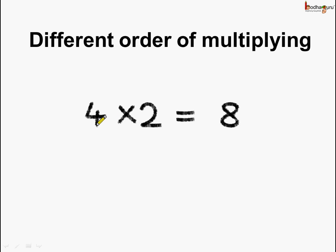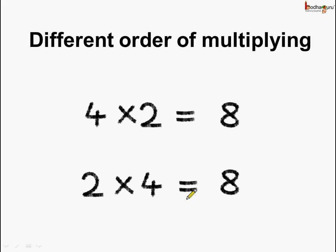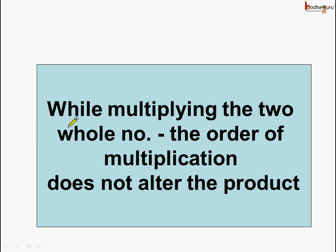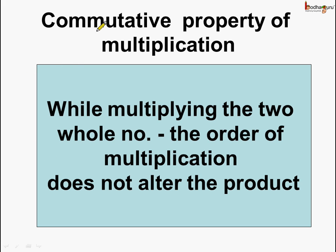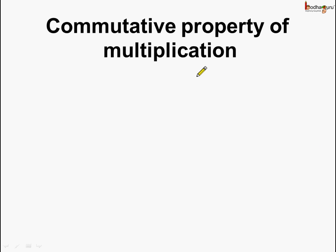4 multiplied by 2 is equal to 8, and 2 multiplied by 4 is also equal to 8. So even if we change the order of multiplication, the product is always the same. What do we learn from this? That while multiplying 2 whole numbers, the order of multiplication does not alter the product, and this property is called commutative property of multiplication.